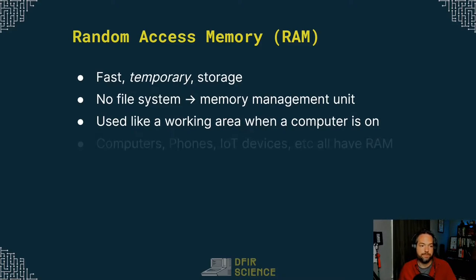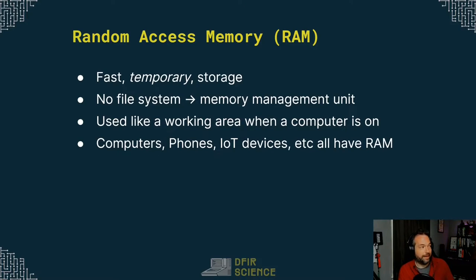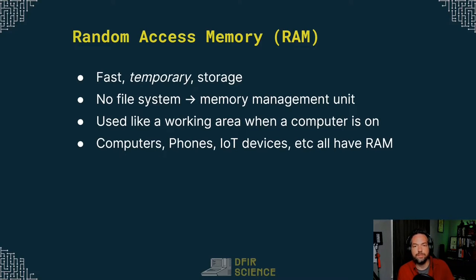Computers, phones, IoT devices, and so on all have RAM. Almost any digital device you deal with these days is going to have RAM or something like it. If you're dealing with a computer, it definitely has random access memory. If you're dealing with a mobile phone, it also has random access memory. IoT devices in your home can have — and most of them do have — random access memory. You'll find RAM in a lot of places, but it's generally more difficult to access RAM on these devices than it is to access a hard drive.